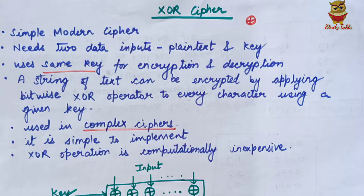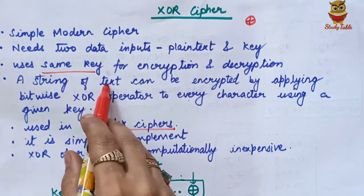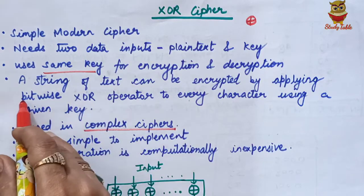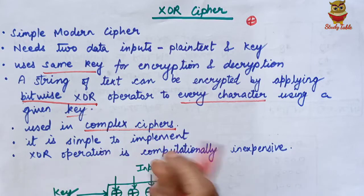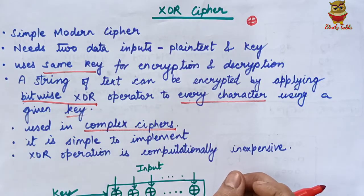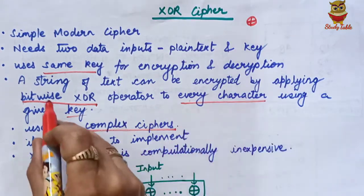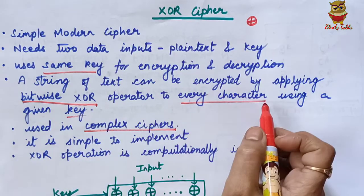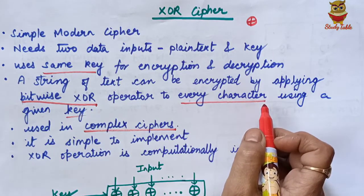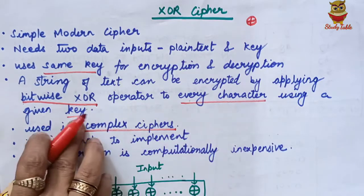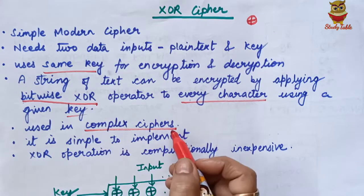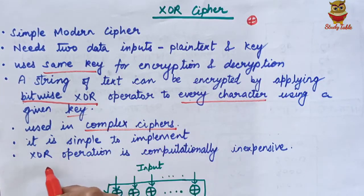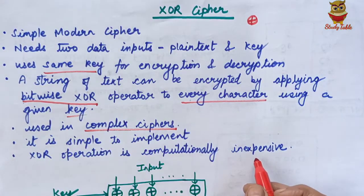We will continue to study ciphers like AES, DES, etc. A string of text can be encrypted by applying the bitwise XOR operator to every character using a given key. When encrypting, we apply a bitwise XOR operator to each character, converting bits to bits, and the key is provided accordingly. XOR cipher is used in complex ciphers, is simple to implement, and the XOR operation is computationally inexpensive.